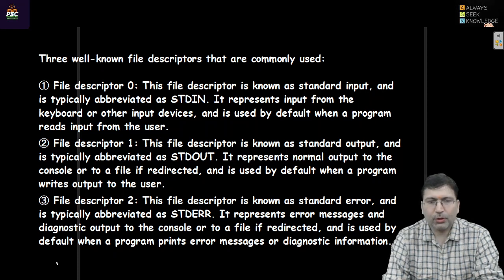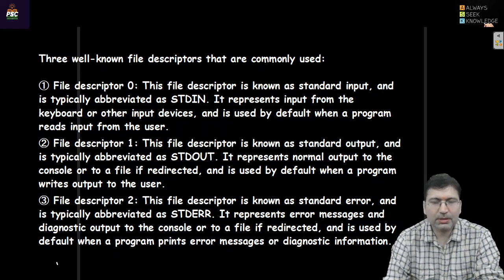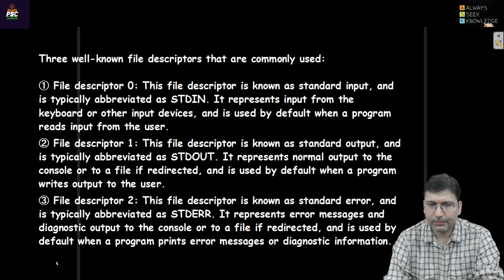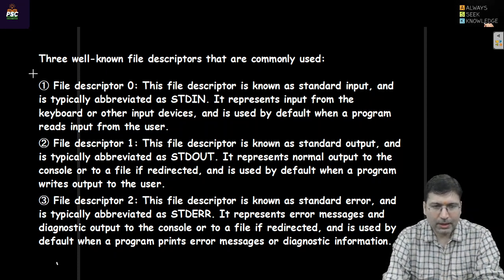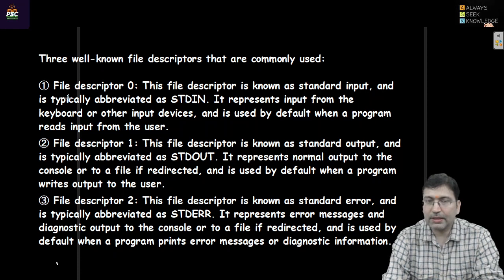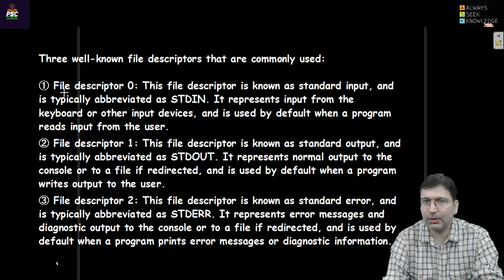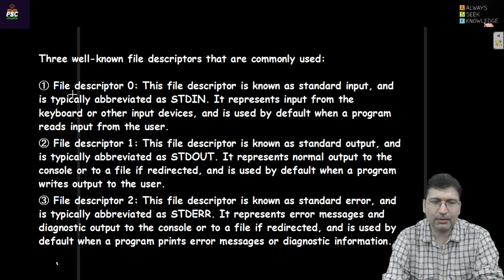So for what purpose do we use dup? Actually, dup can be considered as the short form of duplicate. We use this system call to create duplicate file descriptors. We are already aware — I have discussed in one of my lectures — that there are three default file descriptors: file descriptor 0, 1, and 2.